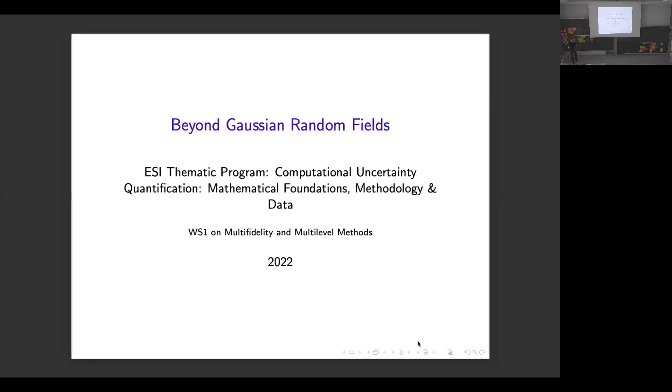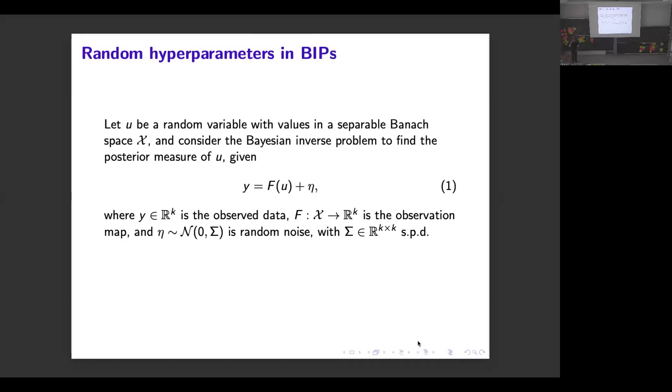One particular topic that we discussed in some more detail was the idea to use random hyperparameters for Bayesian inverse problems. If you consider the classical Bayesian setting where you have some given prior random variable u which you want to infer in an inverse setting, you are given noisy observations y where the observation noise is some normally distributed vector and you have a given forward map F which is assumed to be defined on some given separable Banach space.